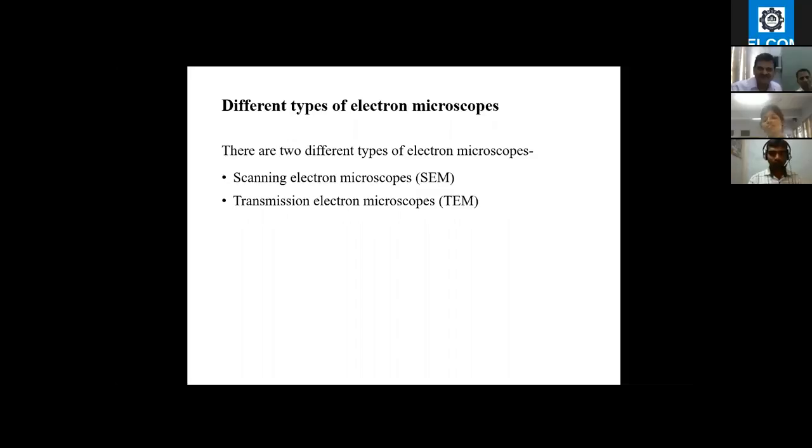There are two different types of electron microscopy: scanning electron microscope (SEM) and transmission electron microscope (TEM). Further details about scanning electron microscopy will be given by my co-host Mikhail Anand.